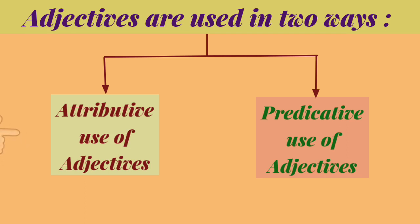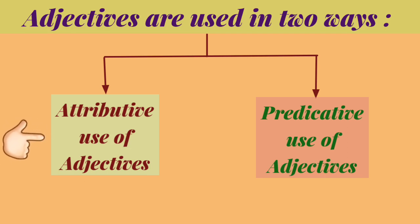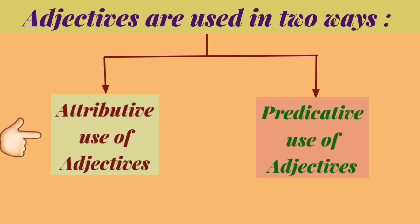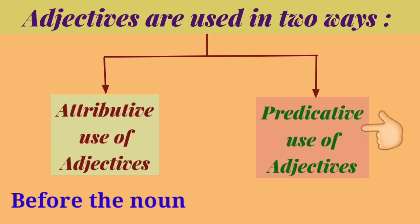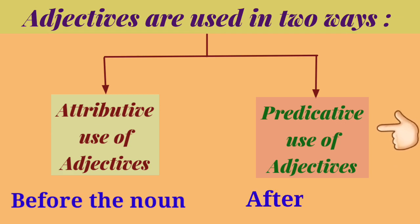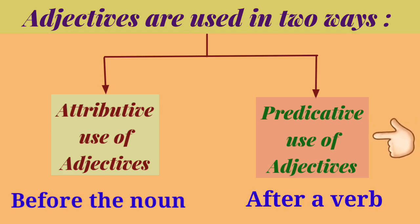In attributive use of adjectives, an adjective is generally placed immediately before the noun. And in predicative use of adjectives, an adjective is placed after a verb.